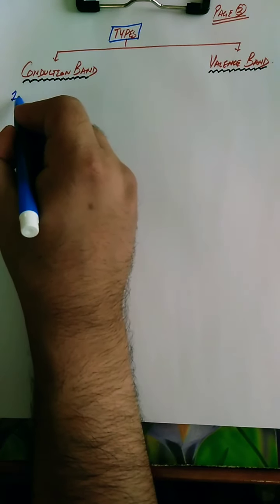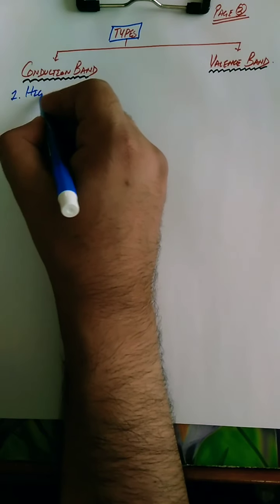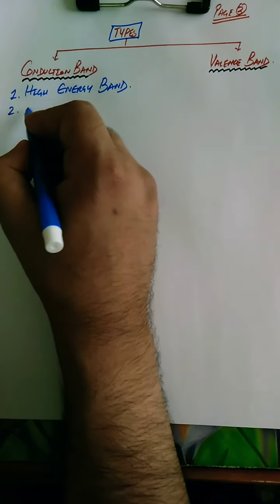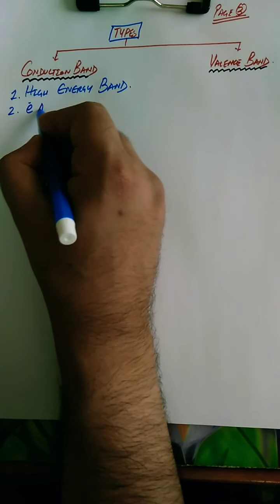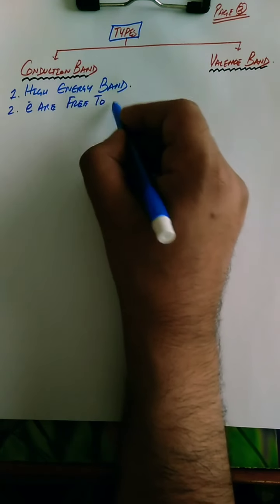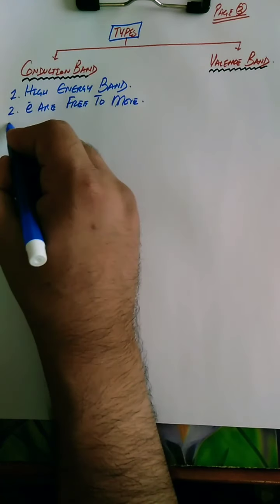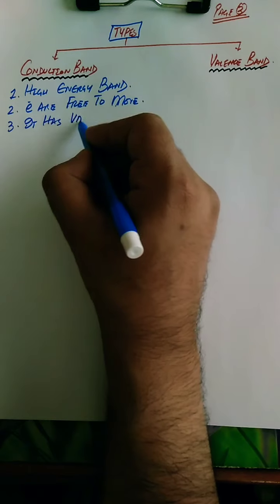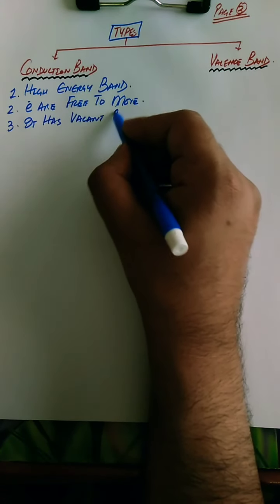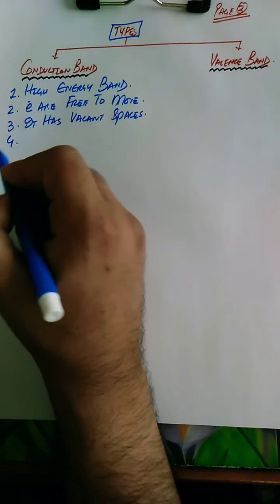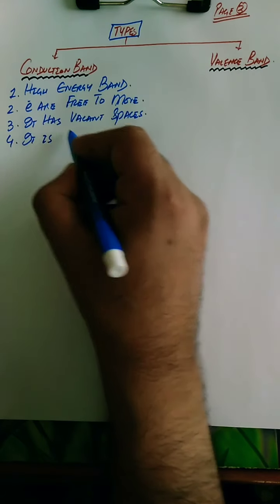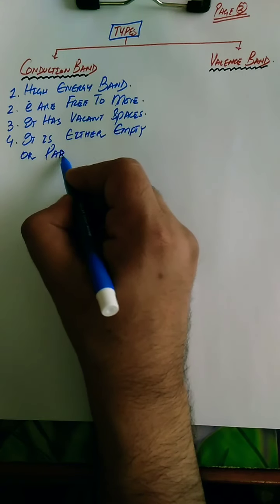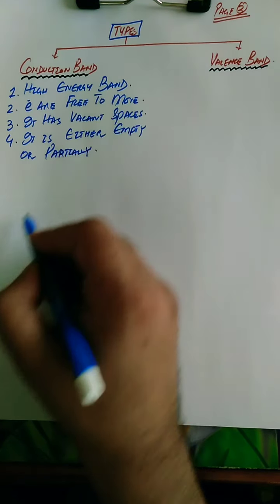The conduction band is basically a high energy band. In this high energy band, electrons are free to move. The conduction band has many vacant spaces - because there are vacant spaces, electrons can easily move. It is either empty or partially filled, depending on the nature of the solid.